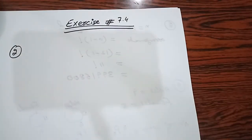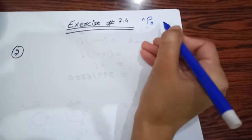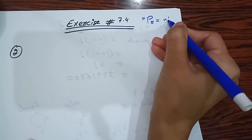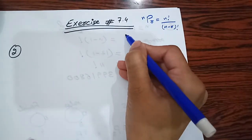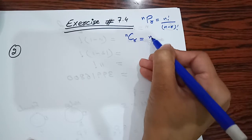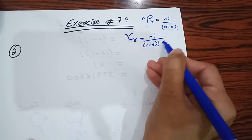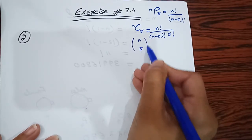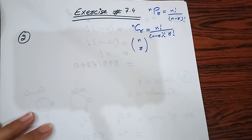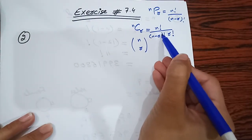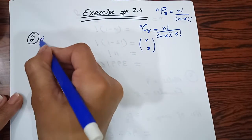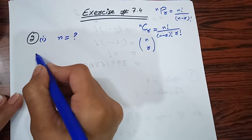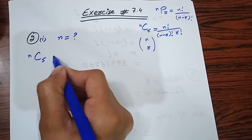Aapne isse pehle sirf permutations kiya. Combinations mein formula ka thoda sa difference hai. Permutation mein nPr use karte hain jiska formula hai n factorial over (n minus r) factorial. Combination mein nCr hota hai - n factorial over (n minus r) factorial aur r factorial. Yahi difference hai in dono formulas mein. Question number 2 ke pehle part mein aapne nc5 = nc4 diya hai aur n ki value find karni hai.